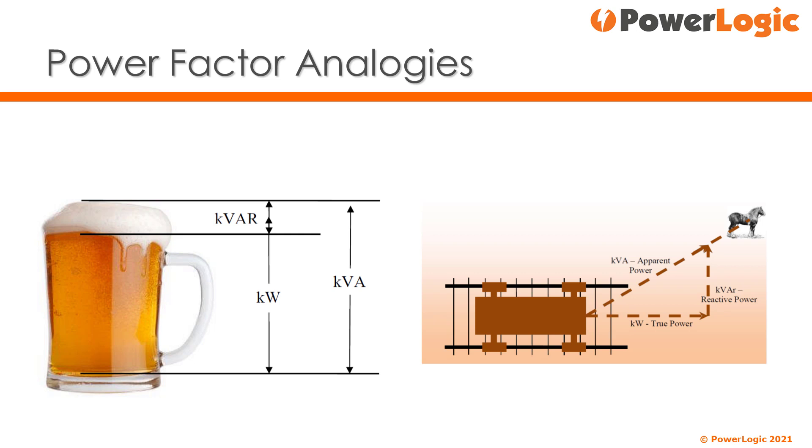The pull directly between the horse and the cart is apparent power, KVA. The effective work being done by the horse is the cart moving down the track, or the real power, kilowatts.